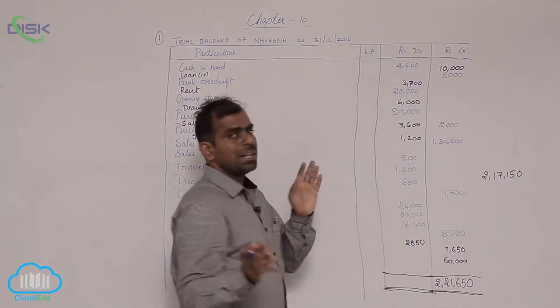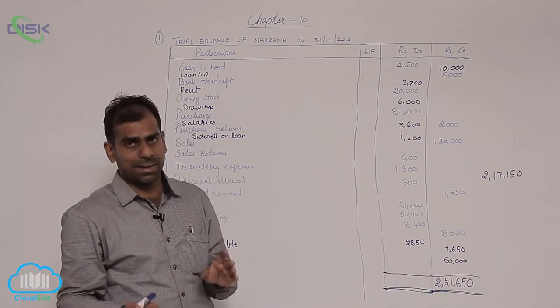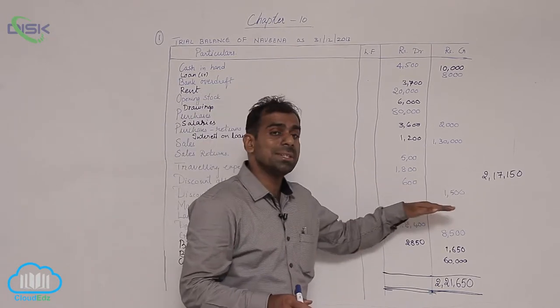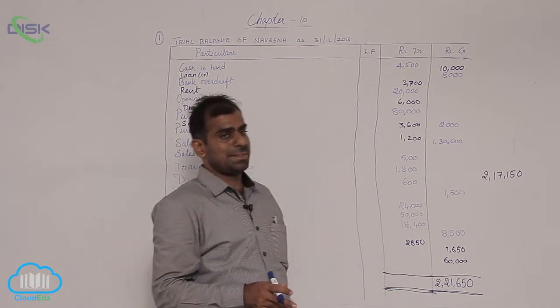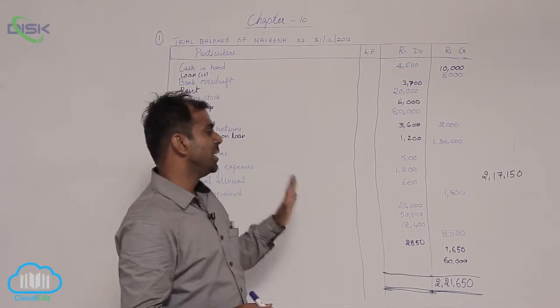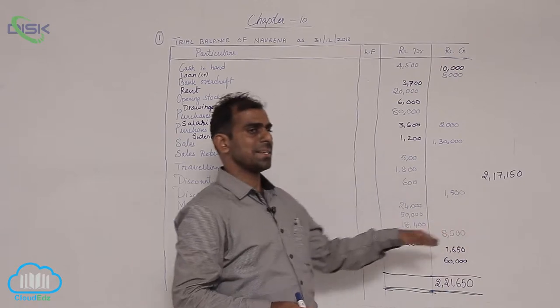Actually, if all the amounts given here are correct, we will find that both sides are equal. But since there is some amount which is wrongly given, I presume, that is why we are having a suspense account.